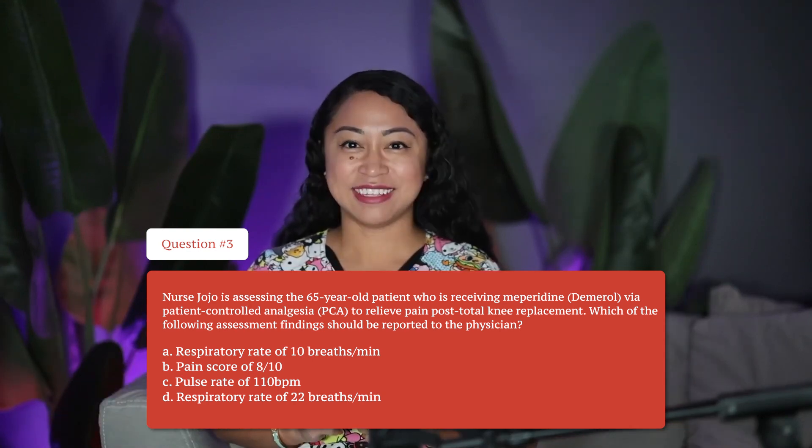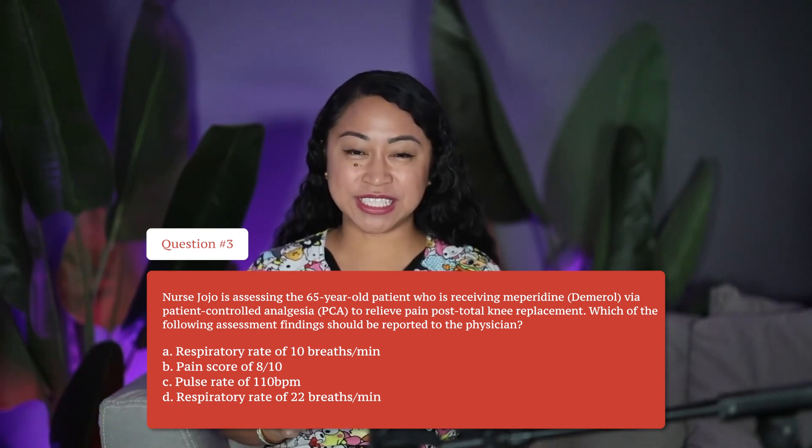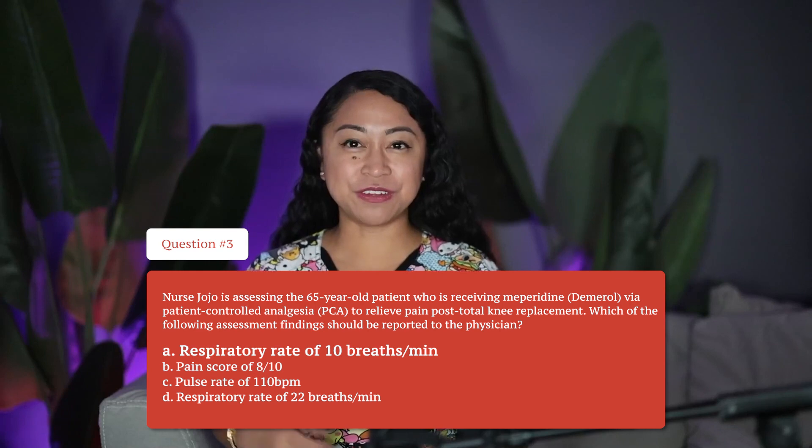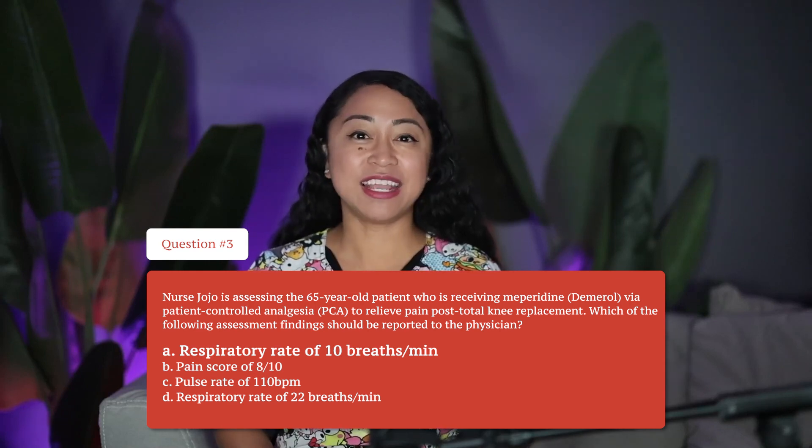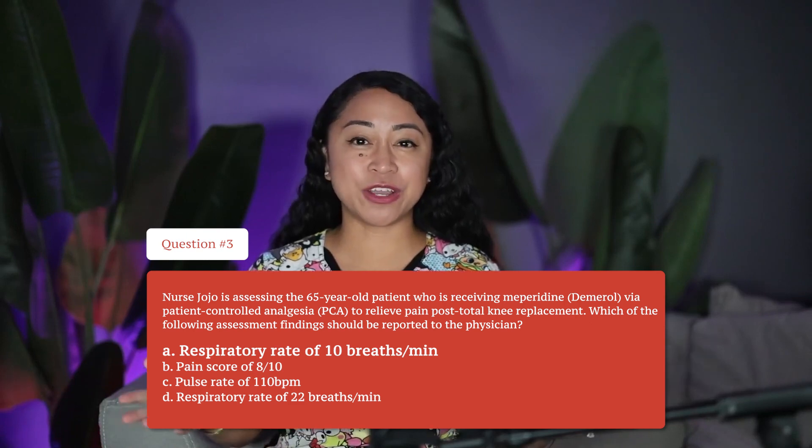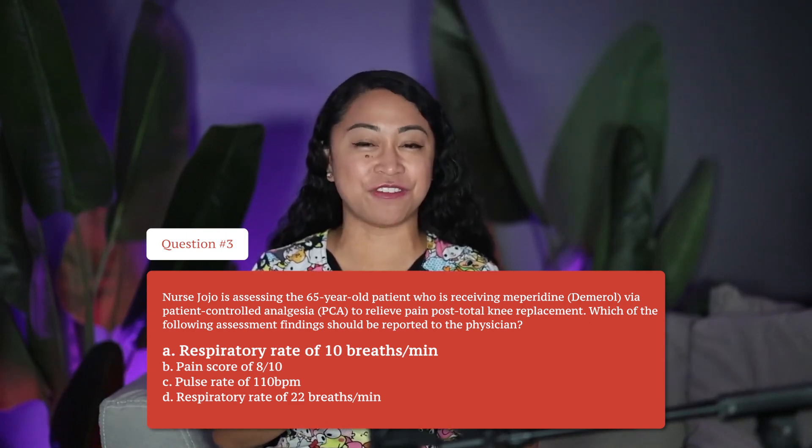The correct answer is A, respiratory rate of 10 breaths per minute. A respiratory rate of 10 breaths per minute is an assessment finding that should be reported to the physician if the patient is taking Demerol. The normal breath rate should be between 12 to 20 breaths per minute. A respiratory rate of 22 breaths per minute is slightly higher than normal but would not be considered an assessment finding that needs to be reported to the physician.